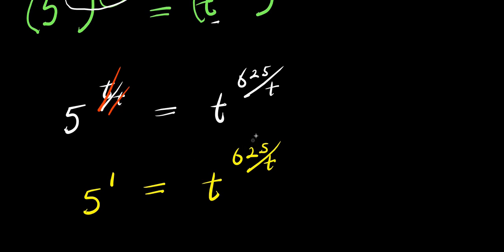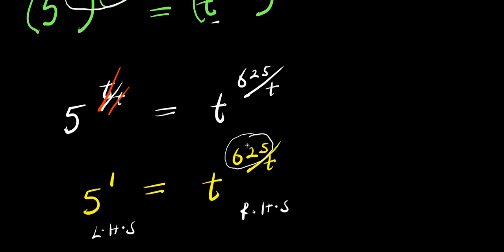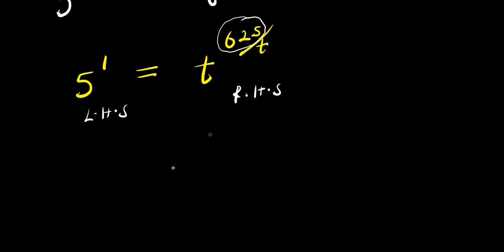Now I also want to eliminate this 6/5 here. Like I said earlier, I want only the variables on the right-hand side and the numbers on the left-hand side. So let's eliminate this by multiplying the exponent by 1 over 6/5.